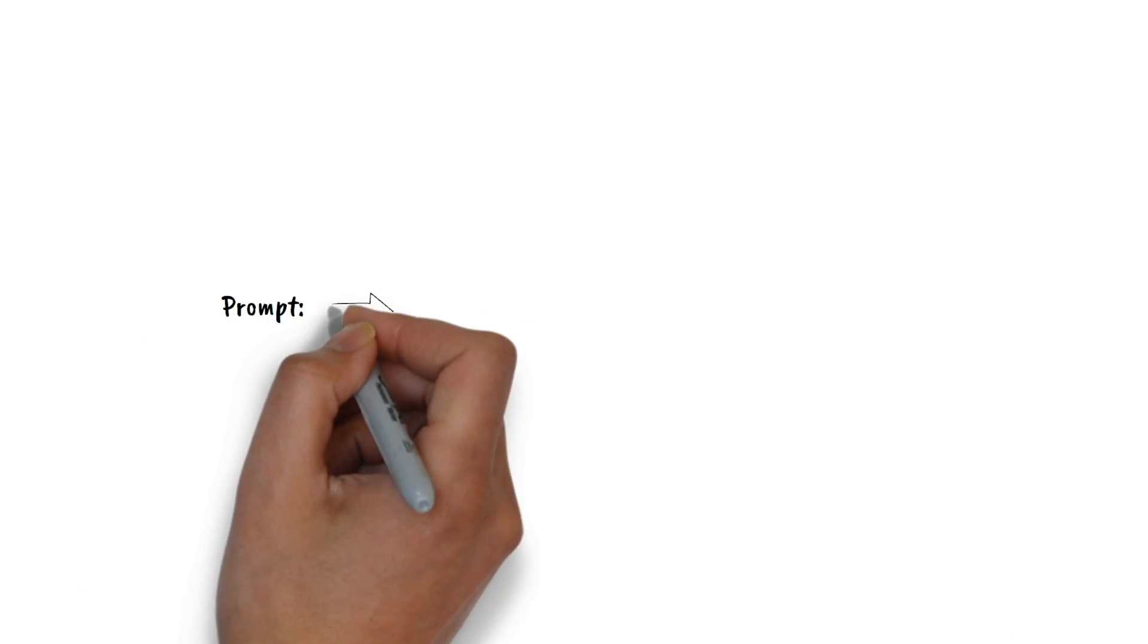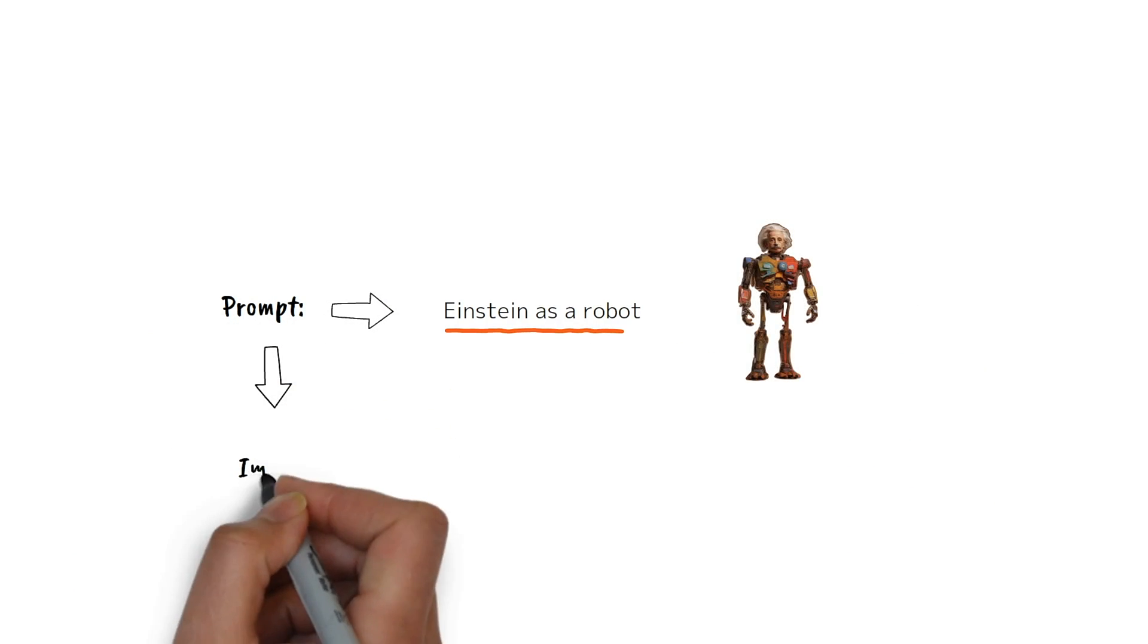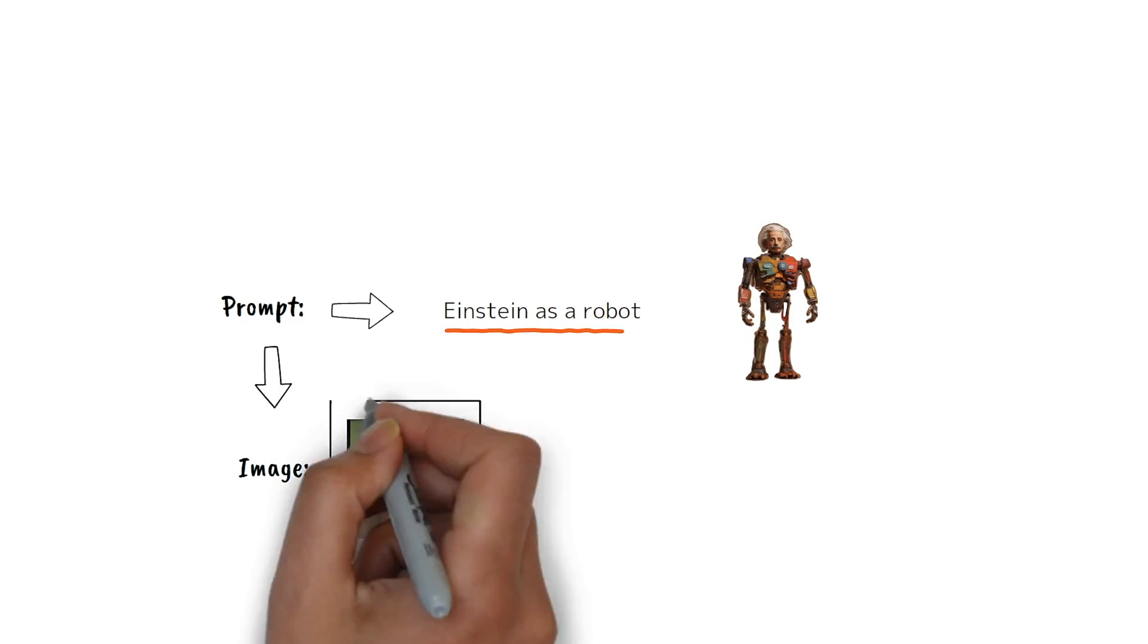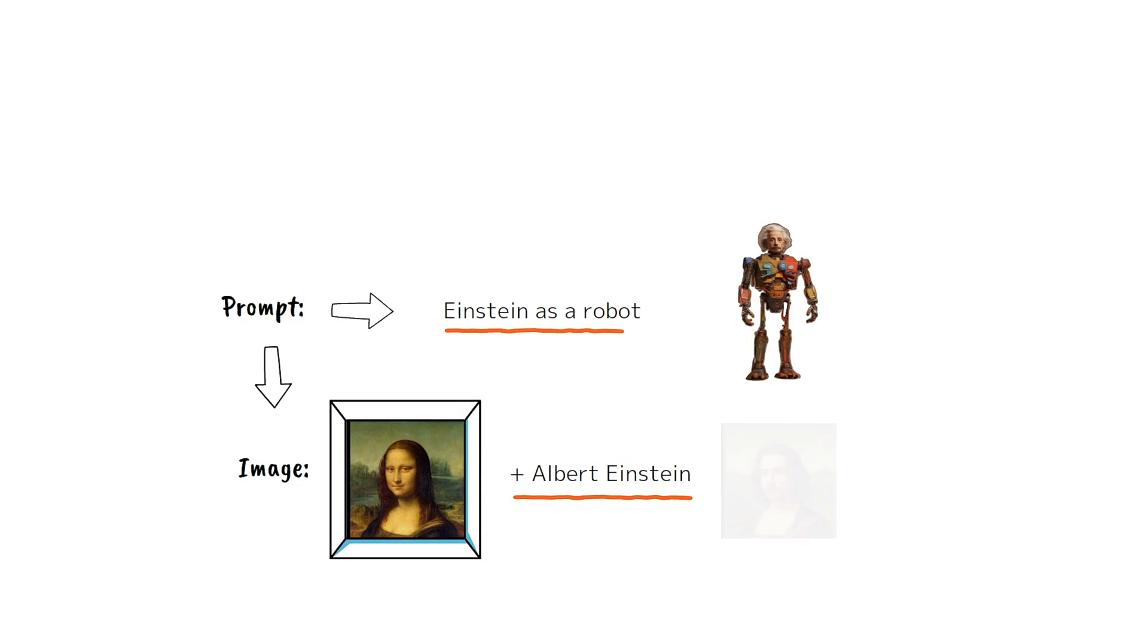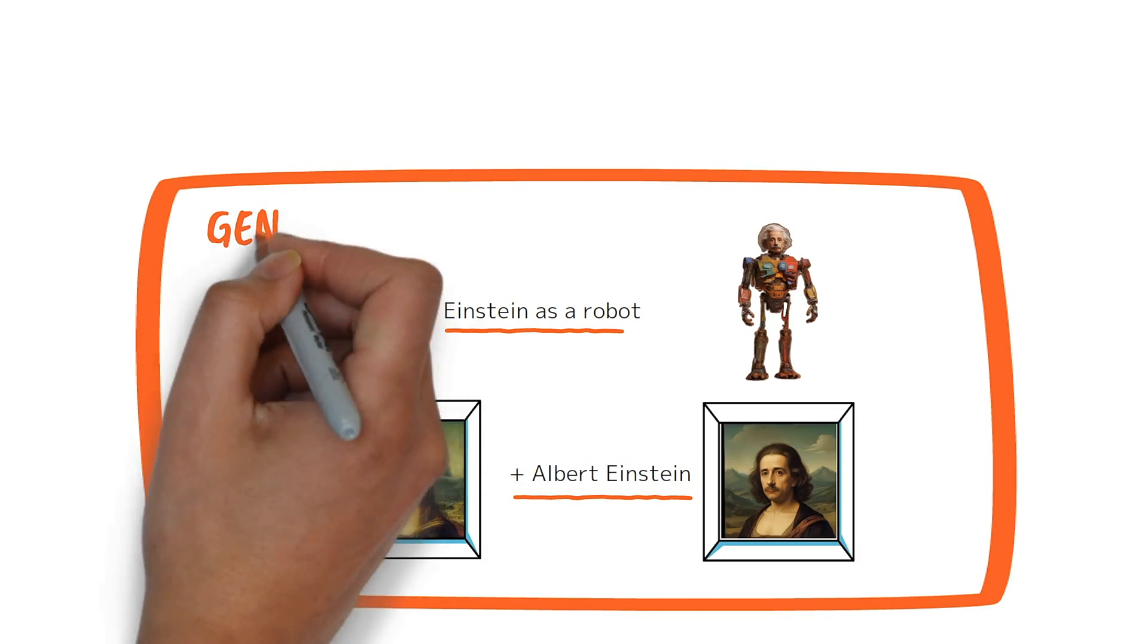It often just takes a simple text prompt to get an amazing image. Or you upload an image, add a text prompt and get something completely new. And that's what we call Generative AI.